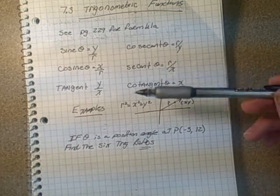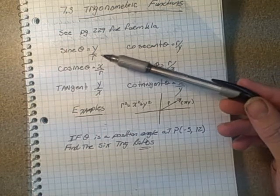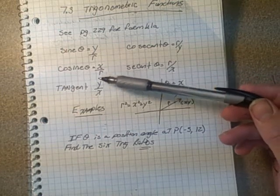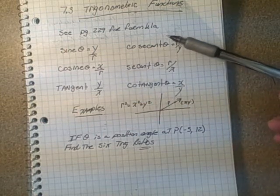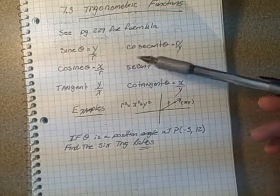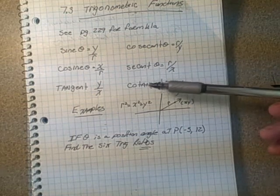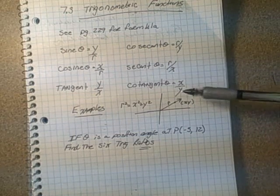I've just written them here quickly. We have to remember that sine is y over r, cosine is x over r, tangent is y over x, cosecant (and these are the reciprocal ratios) is r over y, secant r over x, and of course cotangent x over y.